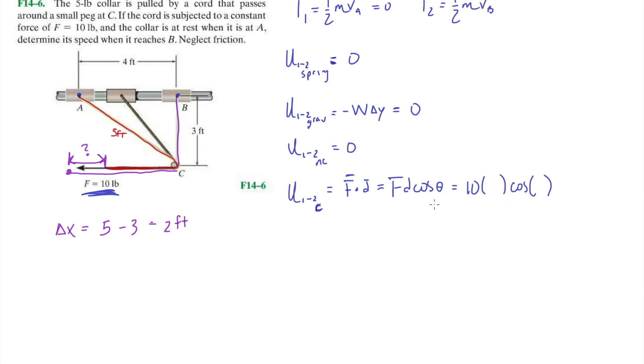So when we go back to here, how much work does that force do on the particle A? Well, I applied that force of 10 pounds for 2 feet, right? The angle between those two, where the distance vector is in this direction, and the force vector is in this direction. The angle between them is 0, okay?